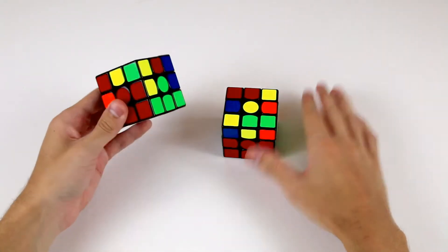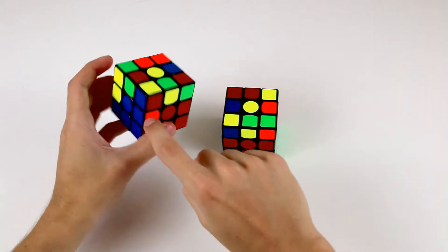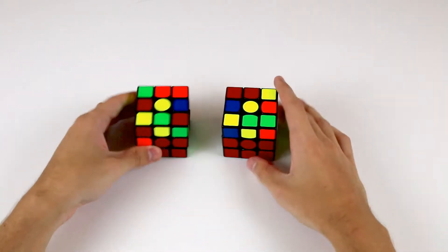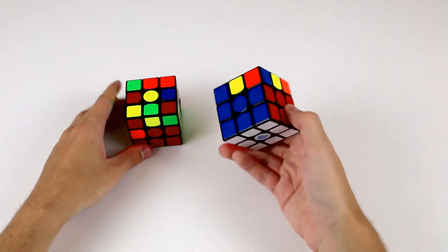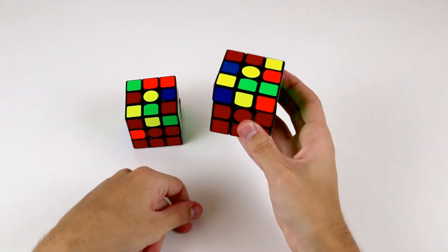The middle layer is quite easy to solve because it only requires the placing of four edge pieces around it. Your cube should currently look like this after you've solved the first layer. And after this step, it will look like this, where you've solved two entire layers.